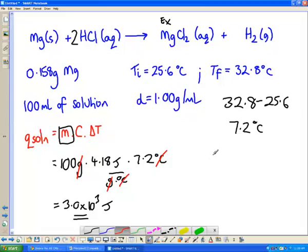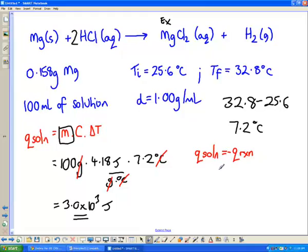Now what this means is the relationship between these two is this, and this is always the case. The energy change or the heat transfer for the solution is always opposite in sign to the heat transfer for the reaction, assuming you have a perfectly insulated system, which you never do, but we're just going to assume that we do. Therefore the heat transfer in terms of our reaction is just going to be the negative sign of that, which is negative 3.0 times 10 to the third joules. Now that makes sense because this is an exothermic reaction, you expect that to be negative.